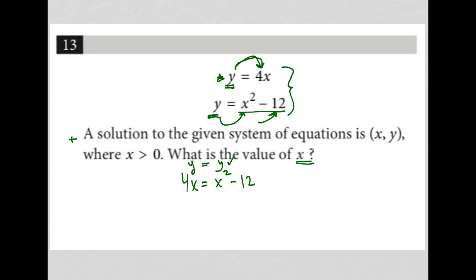So 4x equals x squared minus 12. Now I'm going to subtract this 4x to bring it over to the right-hand side so that I have a trinomial here equal to 0. So I'd have 0 equals x squared minus 4x minus 12.